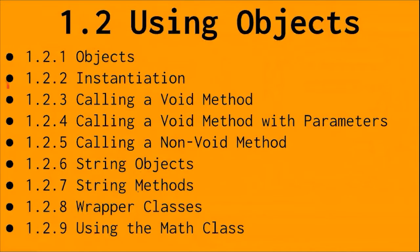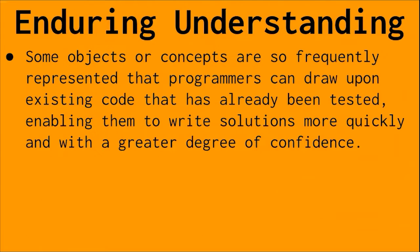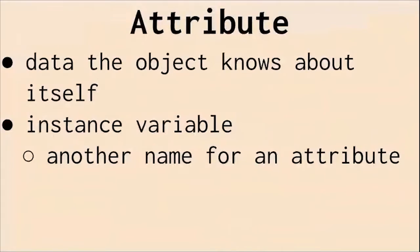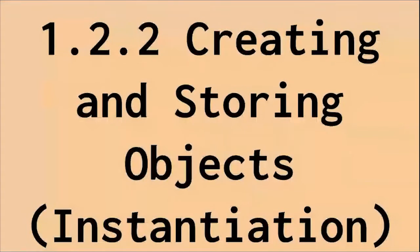Today we are at section 1.2.2, which is about instantiation. Instantiation just means making an instance, and making an instance means making an object. So we're going to be creating objects today — that's more of the focus. We made objects technically in 1.2.1 as well. We talked about that with the enduring understanding and went over all the terms yesterday.